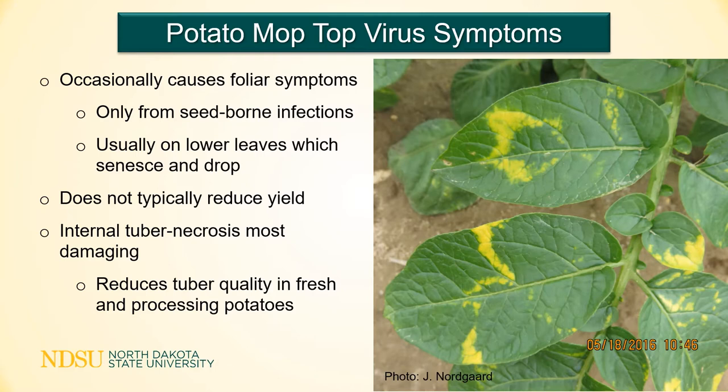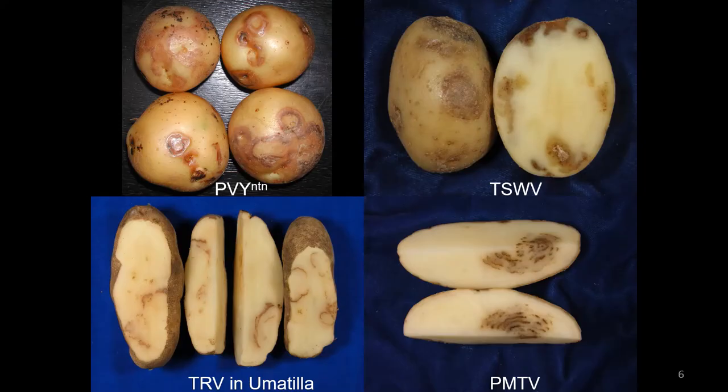Little is known about differences in foliar symptomatology among cultivars. PMTV does not typically reduce yield. What is most important is the reduction in tuber quality caused by internal tuber necrosis. Typical symptoms of PMTV tuber necrosis are shown in the lower right-hand photo, and include internal rust brown arcs, rings, or flecks.